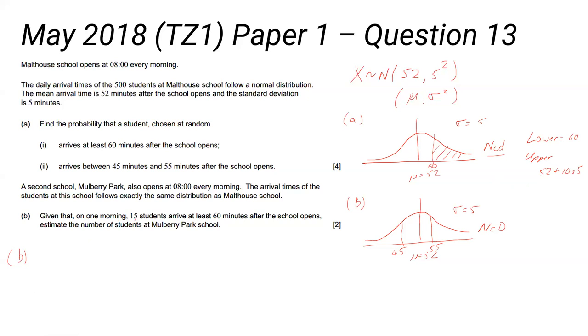And onto part B. Given that on one morning, 15 students arrive at least 60 minutes after the school opens, estimate the number of students at Marlborough Park School. So at least 15 minutes, we've got the same situation here. Let's do our little sketch. Standard deviation 5, mean is 52. At least 60 minutes after school opens. Oh, actually, we don't need to do that. Sorry. Ignore that. We've already got that answer. Of course. I said in the last question that sometimes they gave you something that relied on an answer you've already calculated. We have already calculated that, in fact.